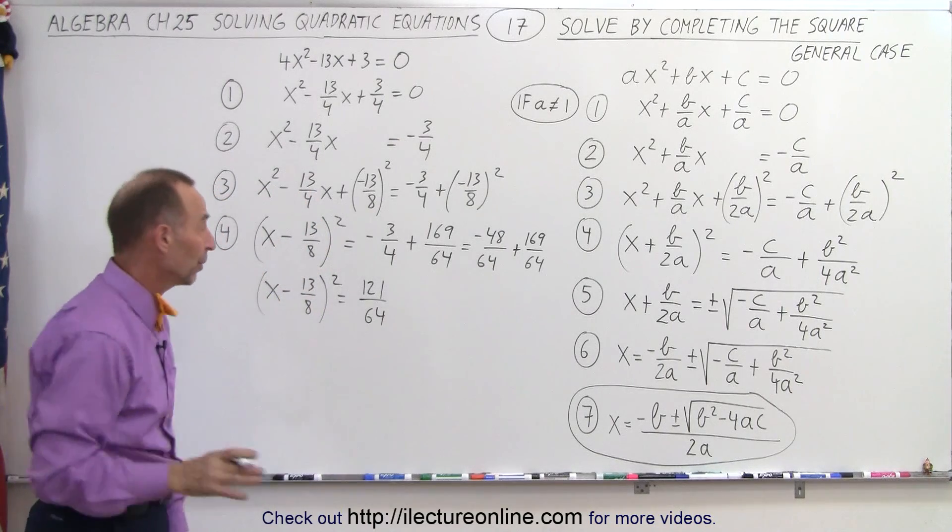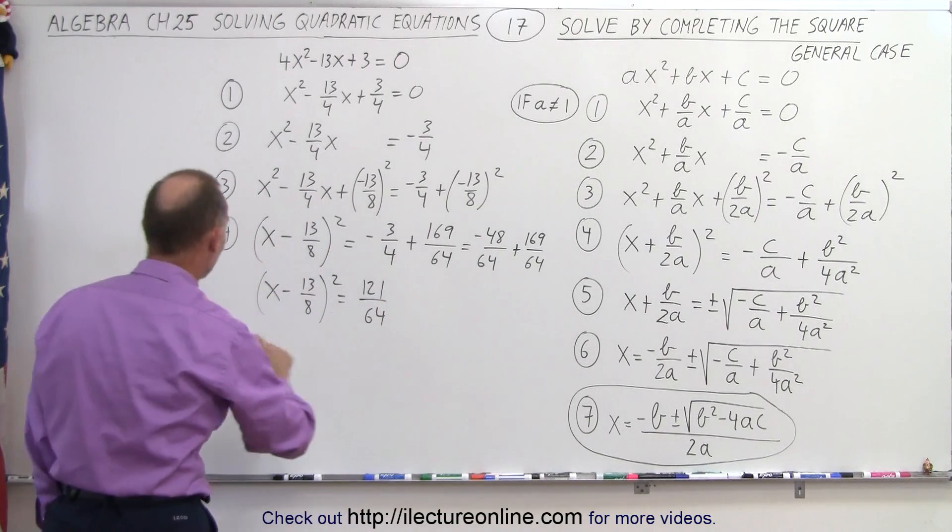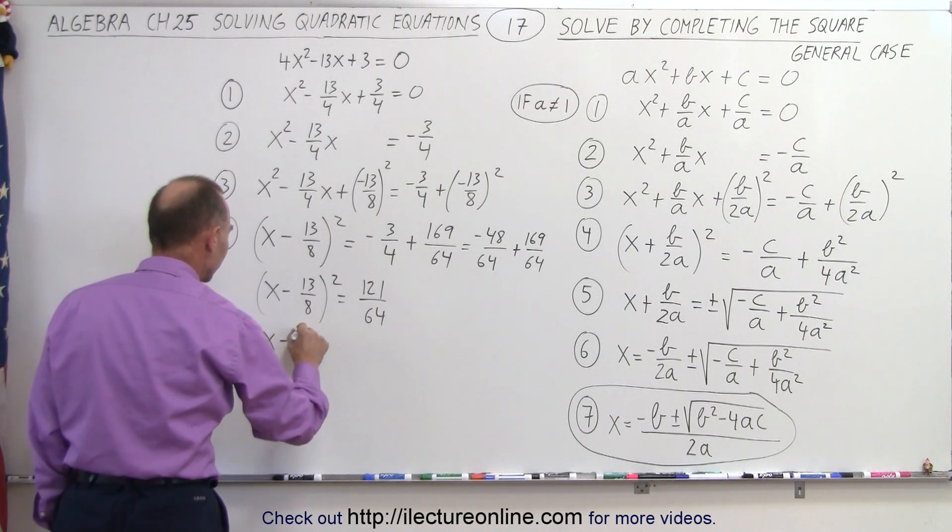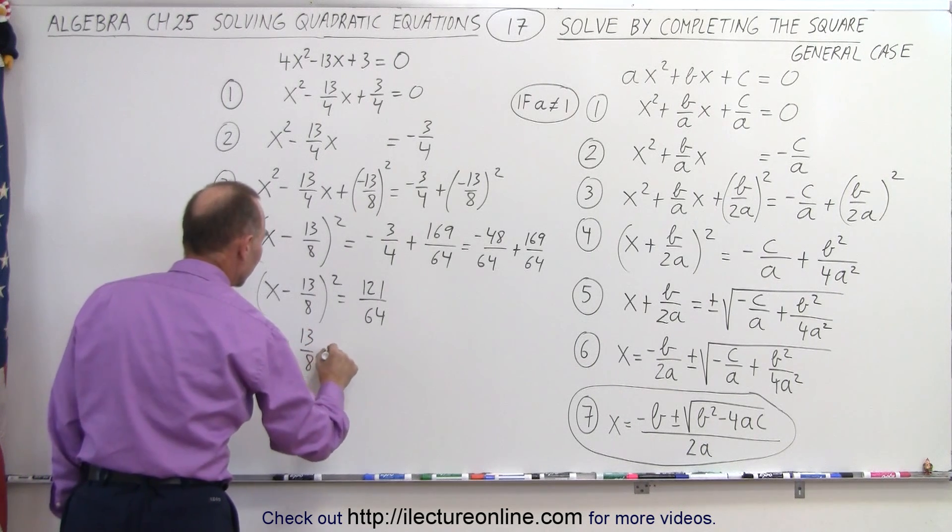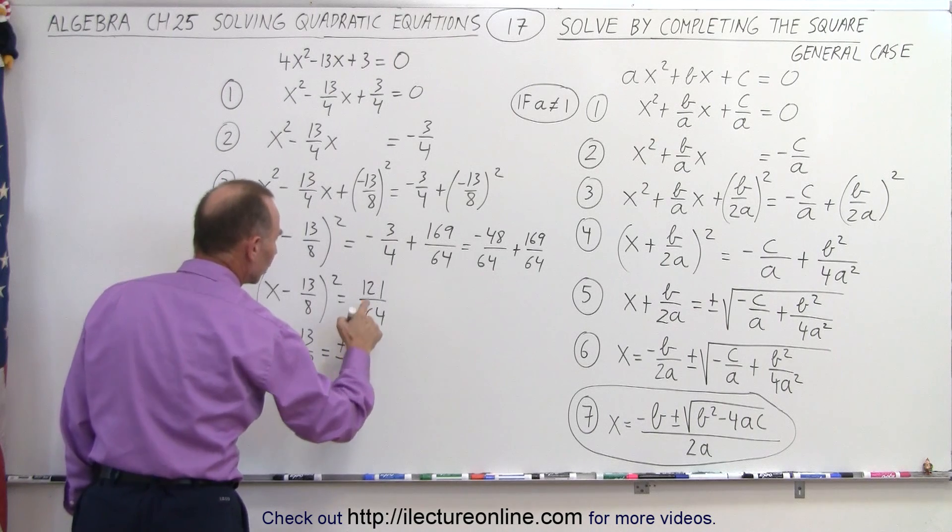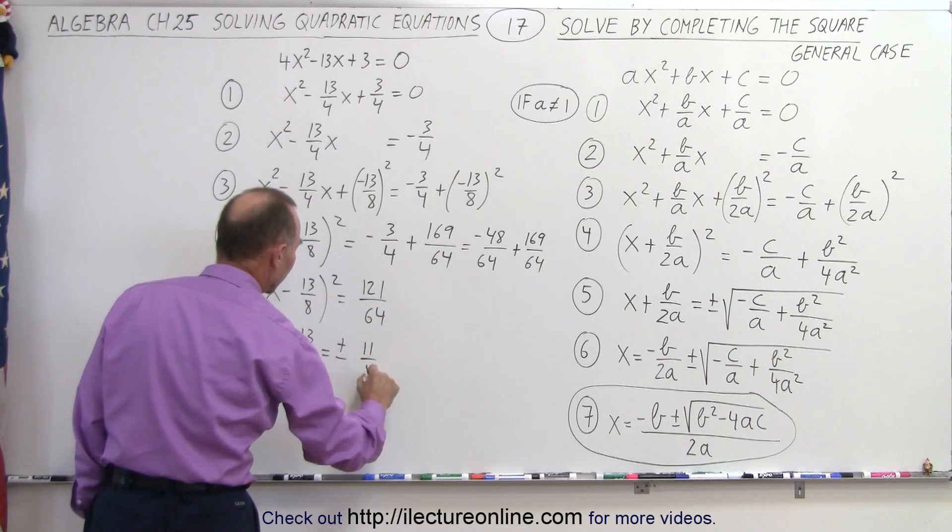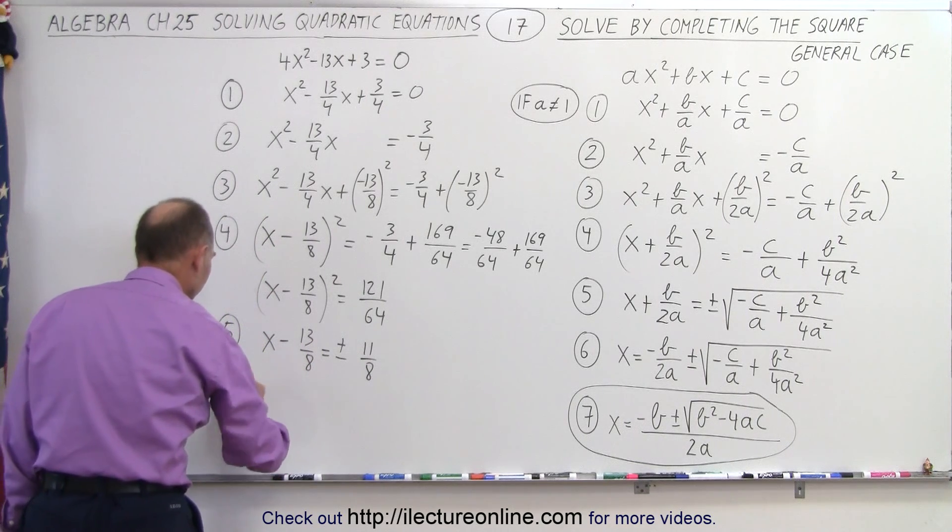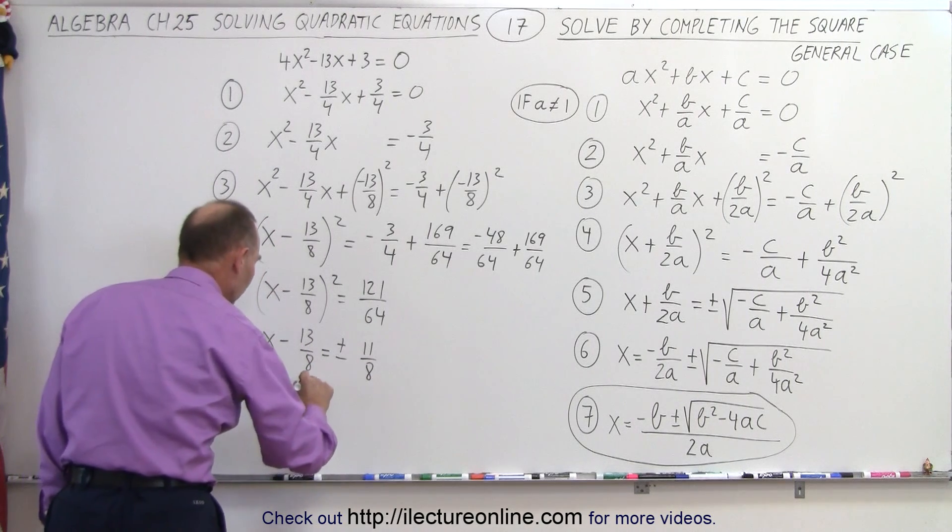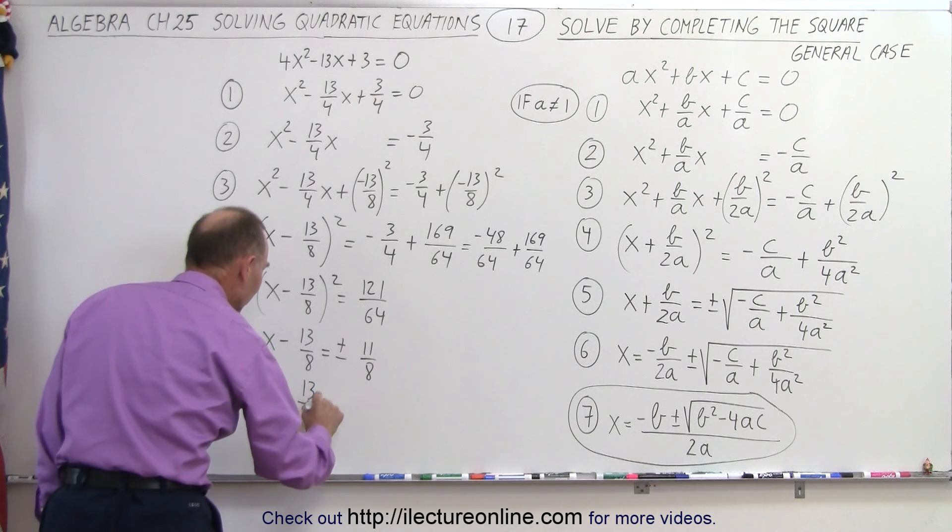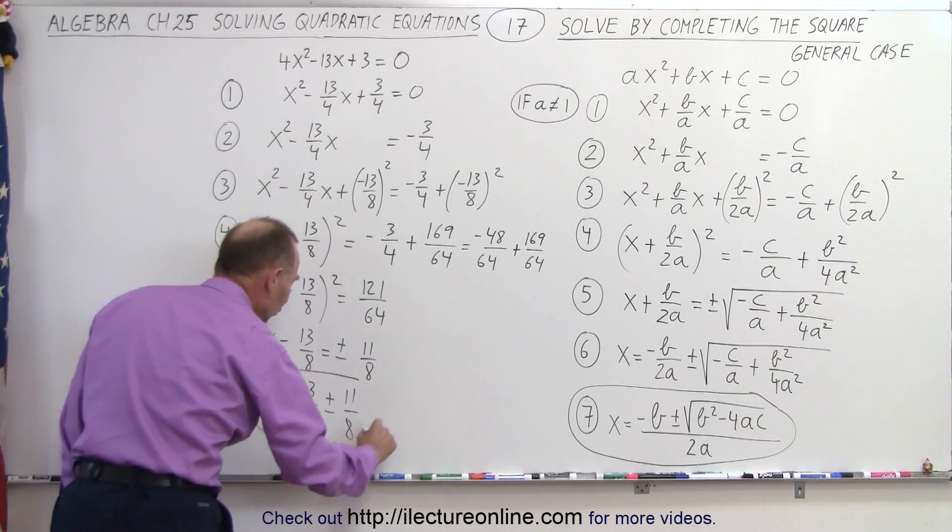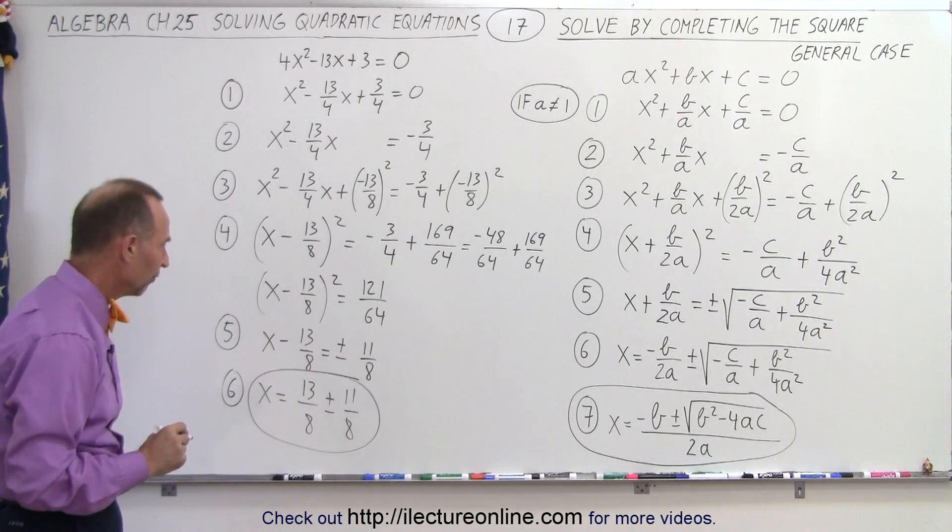Now we're ready to take the square root of both sides. That would be the next step, step number 5. So we end up with x - 13/8 is equal to plus or minus the square root of 121/64, which is 11/8. Then we can move this to the right side. So we have x is equal to positive 13/8 plus or minus 11/8, which means that gives us the two possible solutions for x.